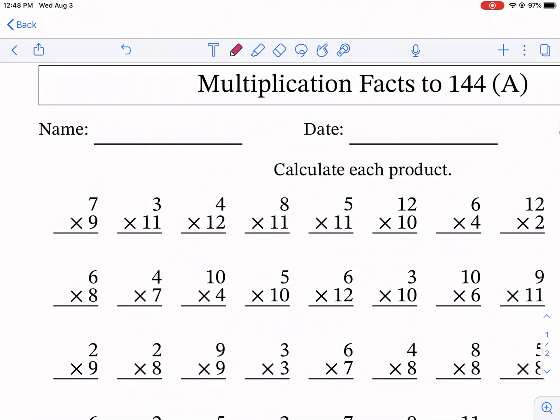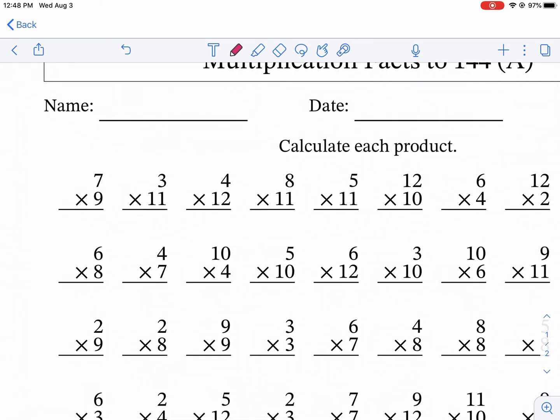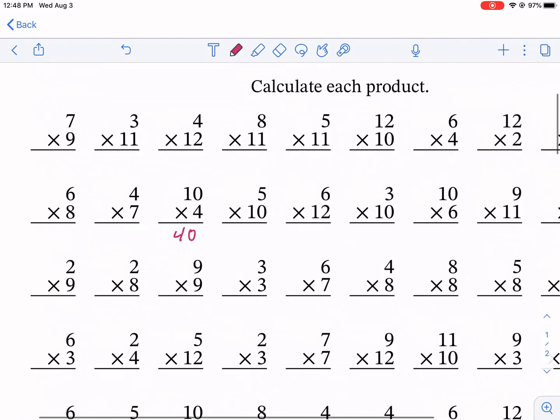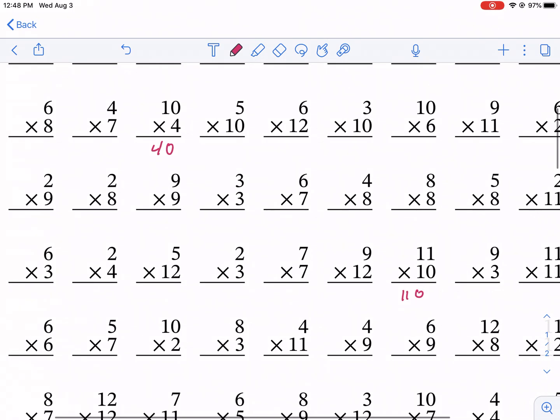So we're gonna go ahead and get into number one, which is some strategies to use. Obviously the easiest of these problems are the tens. The tens are kind of like your baseline in terms of easy because we just essentially do the four times one and add a zero.